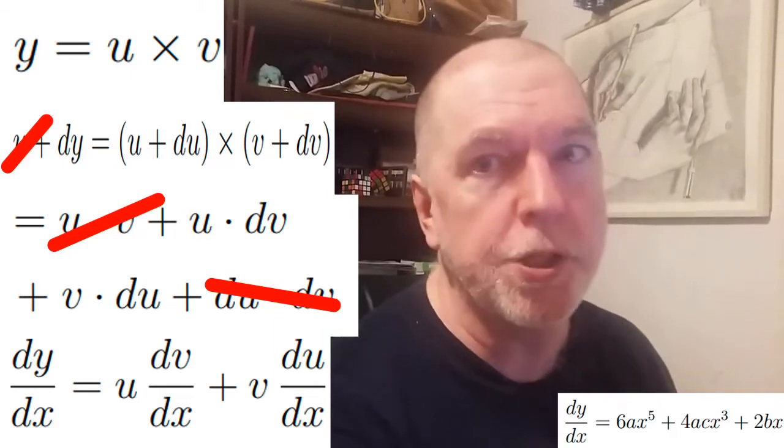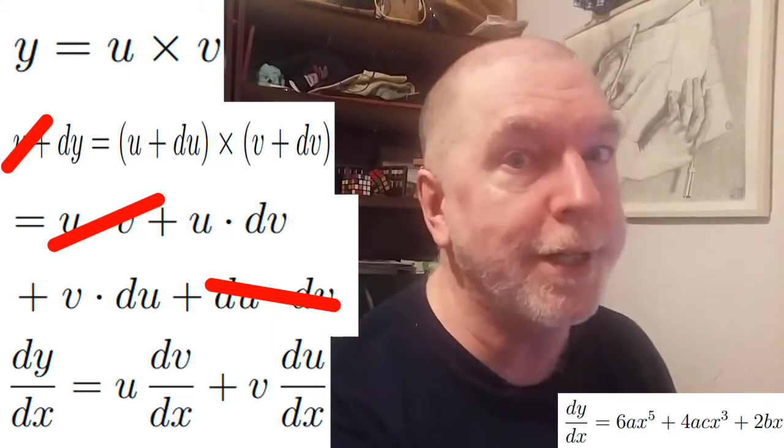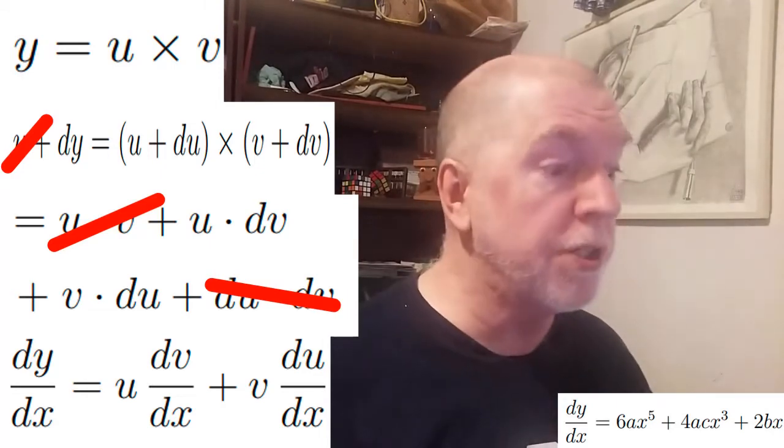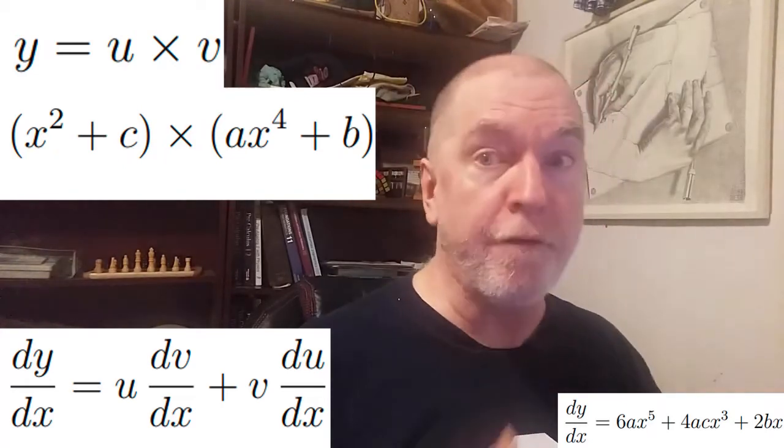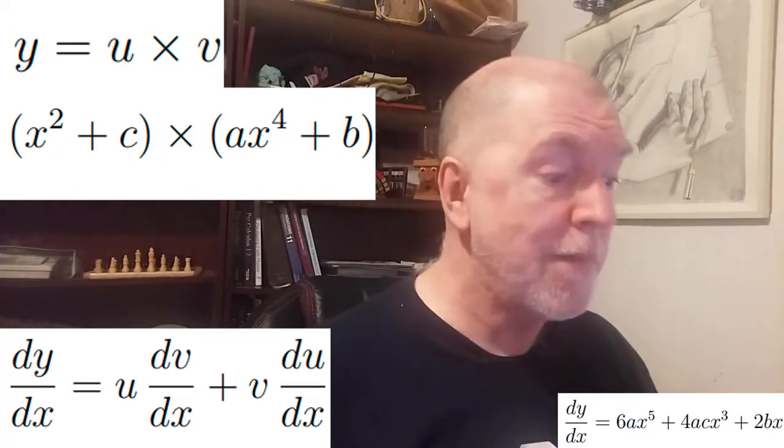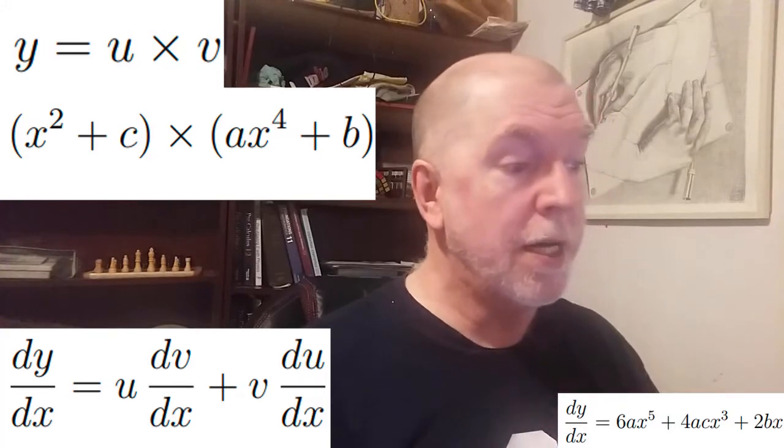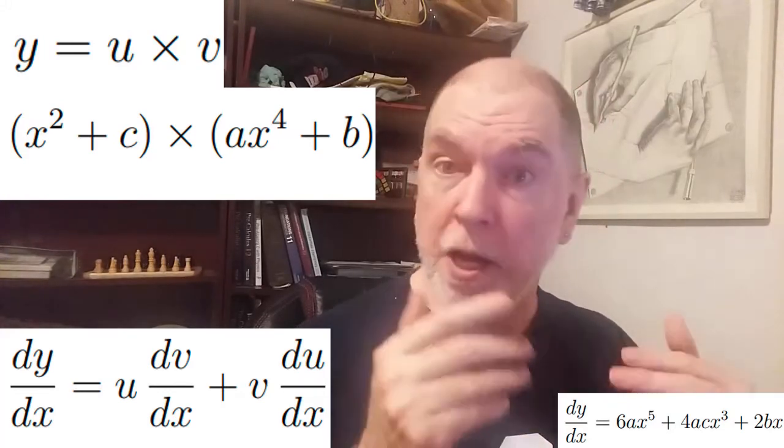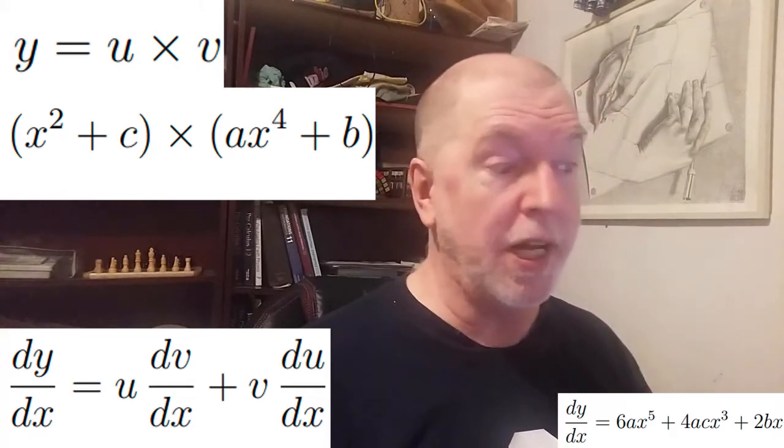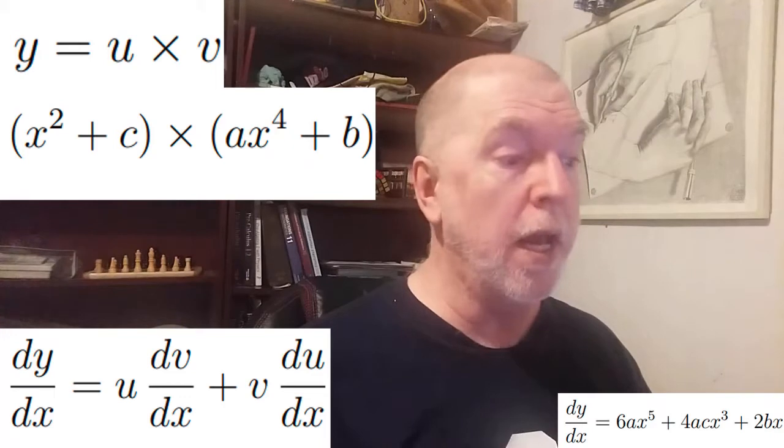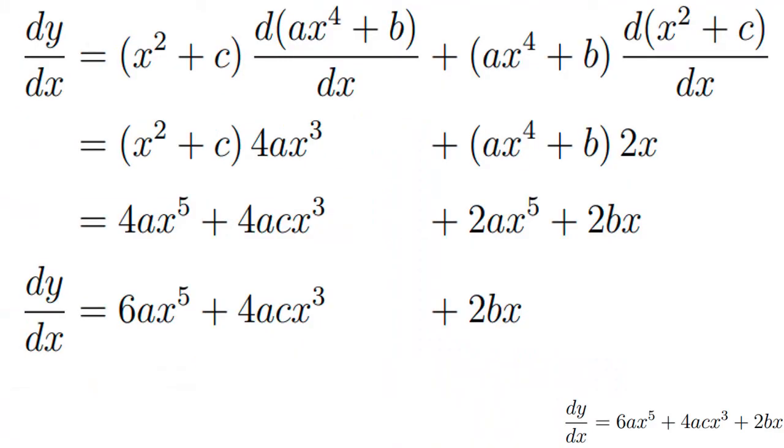Let's go back to our paradigm pair of functions, the product. x squared plus c, that's going to be our u. ax to the fourth, that's going to be our v. So dy by dx is u times dv by dx plus v times du by dx. Keep the x squared plus c constant, differentiate the v. Keep the ax to the fourth plus b constant, and differentiate the u. And this, we multiply through, clean up a little bit.